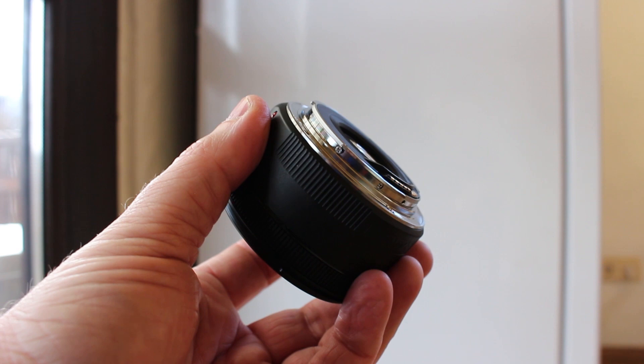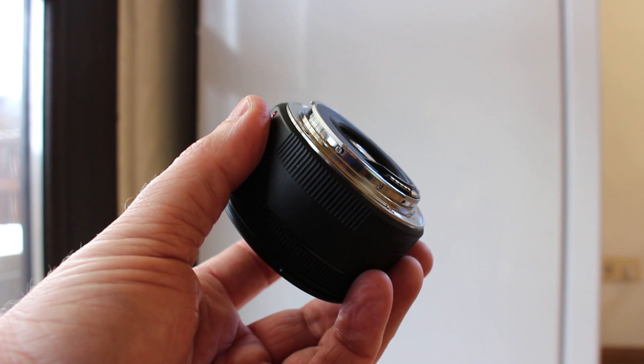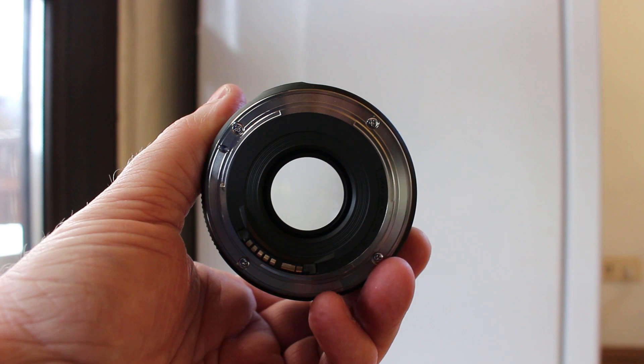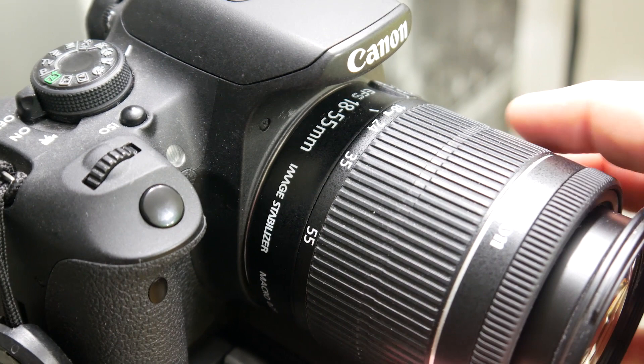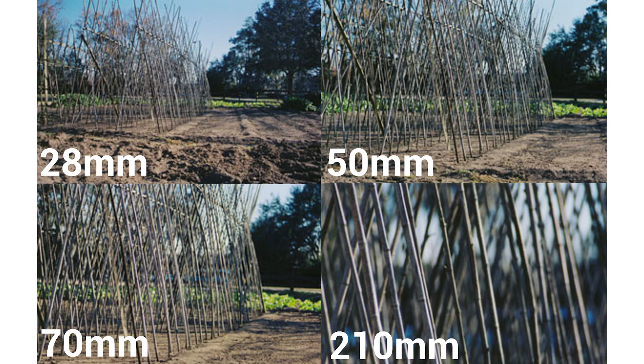Before light can hit the sensor, it has to travel from outside into the camera body, and the first thing it goes through is the lens. The lens focuses light onto a specific point so it can be captured by the sensor. The lens also magnifies things that are far away — we call this the focal length. Think of it like binoculars attached to your camera. A higher focal length number like 200, 300, or 400 means you're zoomed in, while lower numbers like 18, 25, or 50 are much closer to normal eyesight.